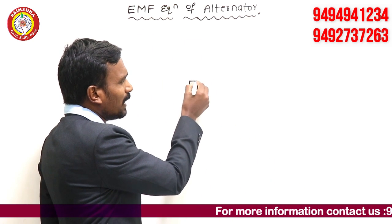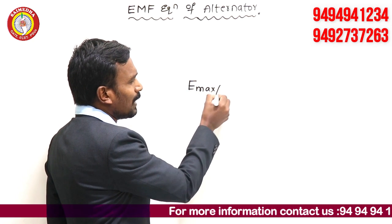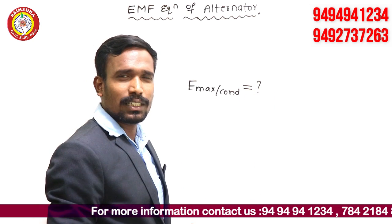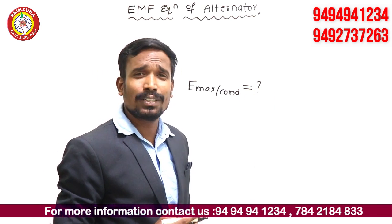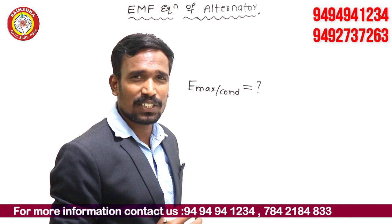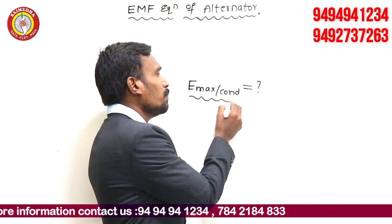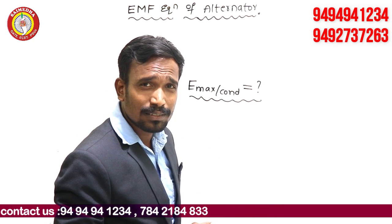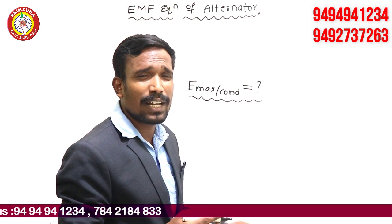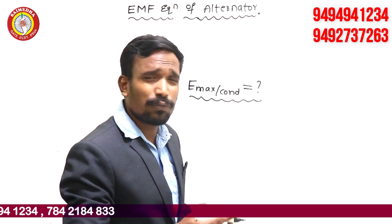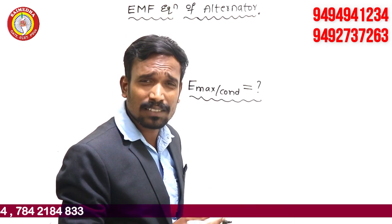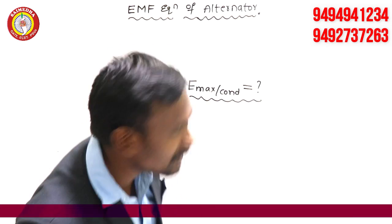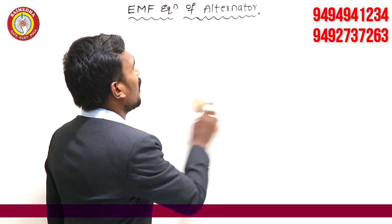Can you tell me what is E maximum per conductor? E maximum per conductor is equals to how much? I think you know very well about EMF equation of synchronous machine. Is it 4.44 π f n Kp Kd? Or 4.44 π f T Kp Kd? Let's see what E maximum per conductor is. Let's see the EMF equation of the alternator.